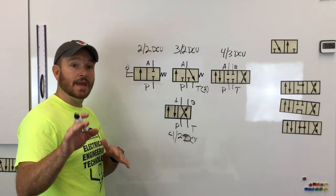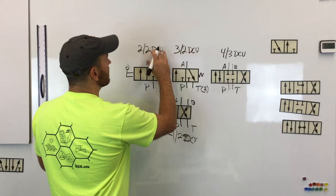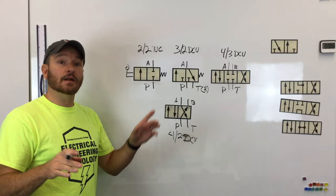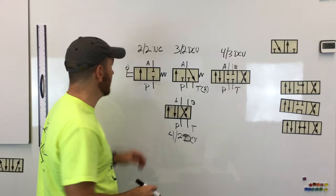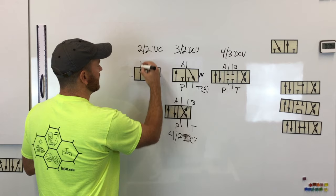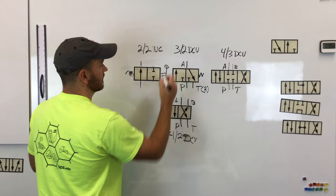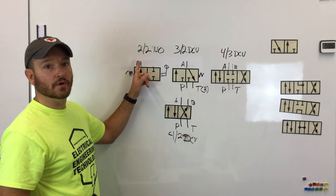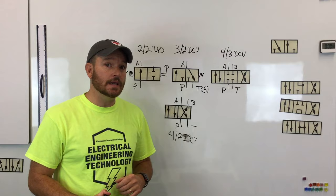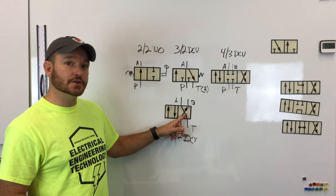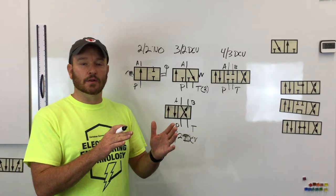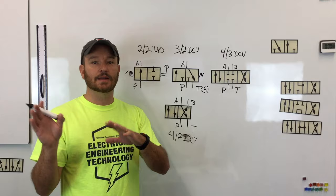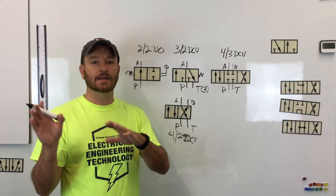Some manufacturers identify this as a two-two normally closed directional control valve. You can also make it normally open — in its normal position, oil will flow right through. However, the concept of normally open or normally closed gets tricky on a four-two directional control valve, because there isn't really a normally open or normally closed position. Some say it indicates whether the cylinder is extended or retracted, but that doesn't make sense because you can switch that by swapping your A and B ports.